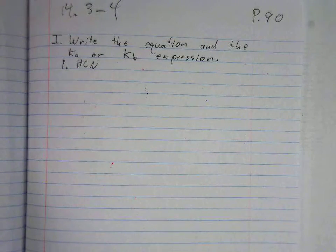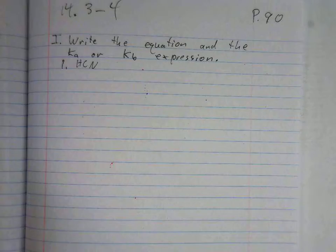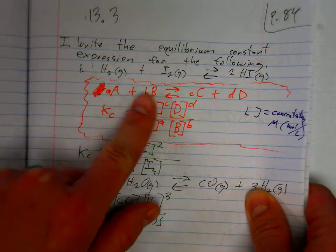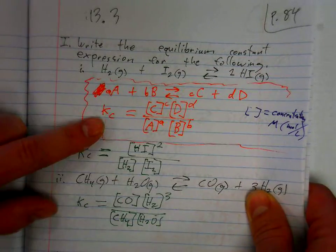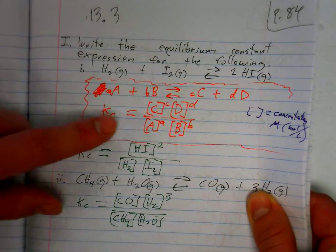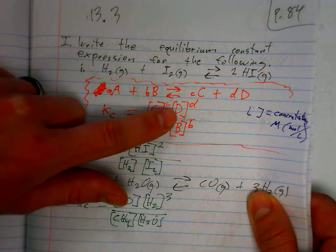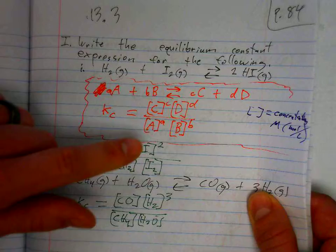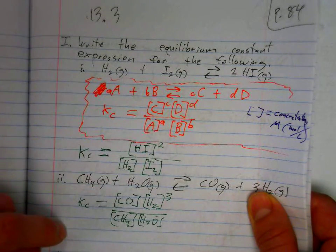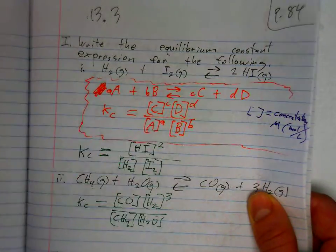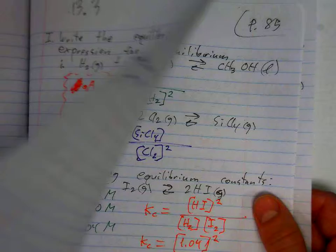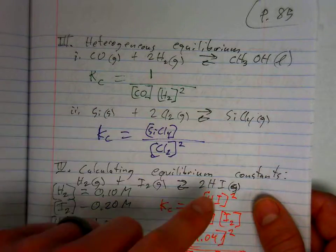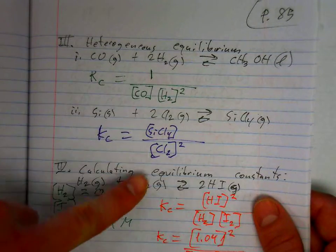Last chapter, we did equilibrium expression, and so we looked at things like this. If we have an equation like this one, we can write the equilibrium constant as equal to the concentration of the product multiplied together, raised to the power of the coefficients, divided by the concentration of the reactants, of course raised to the power of their coefficients as well. And we saw that if there's a pure liquid or a pure solid, we don't include those.